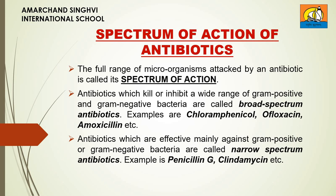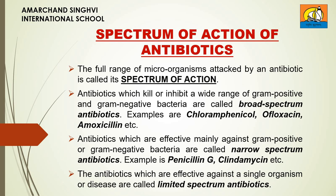Antibiotics which are effective mainly against gram-positive or gram-negative bacteria only are called narrow-spectrum antibiotics. Examples are penicillin G, clindamycin, etc. Antibiotics which are effective against a single organism or disease are called limited-spectrum antibiotics. So these are the three categories: broad-spectrum, narrow-spectrum, and limited-spectrum antibiotics.